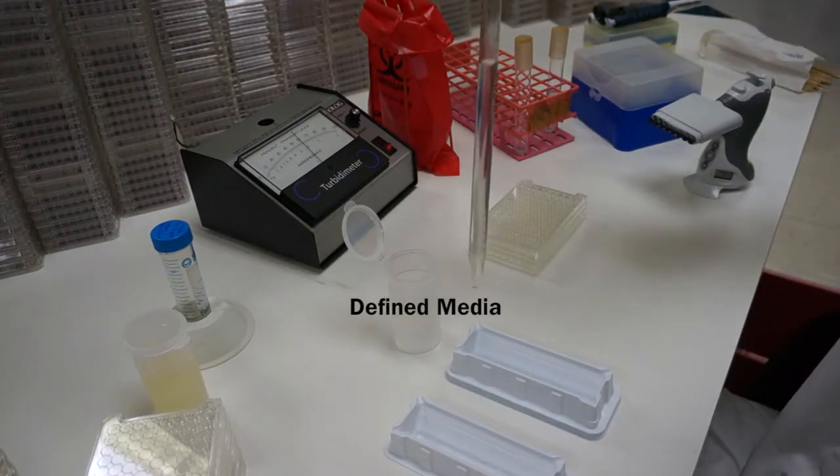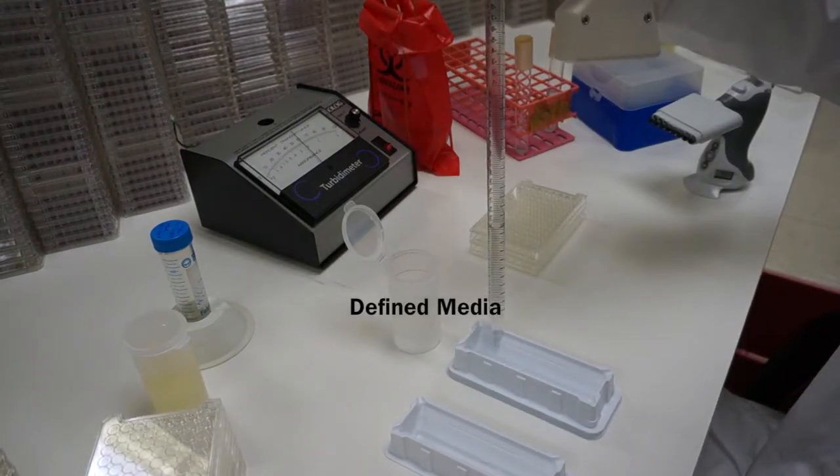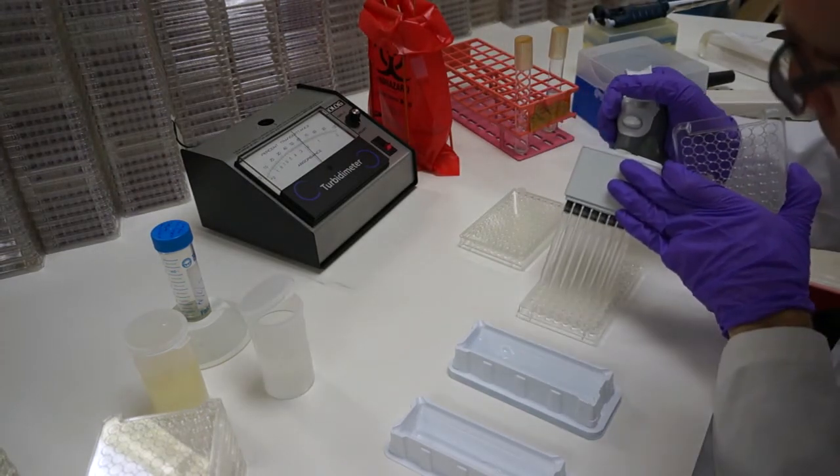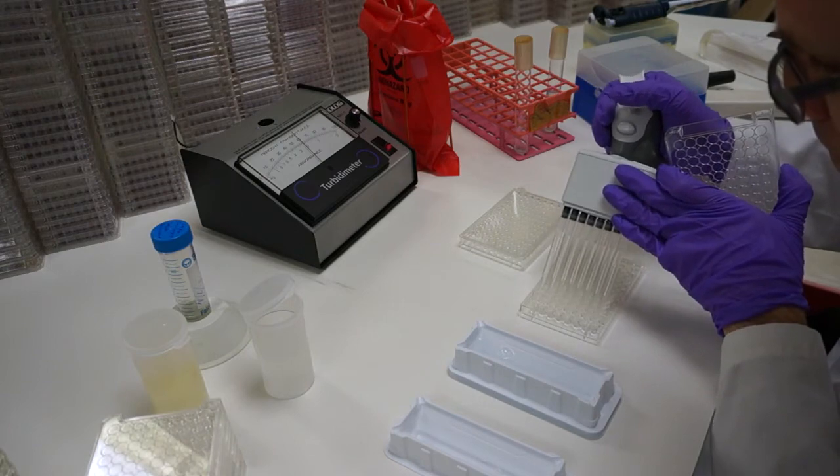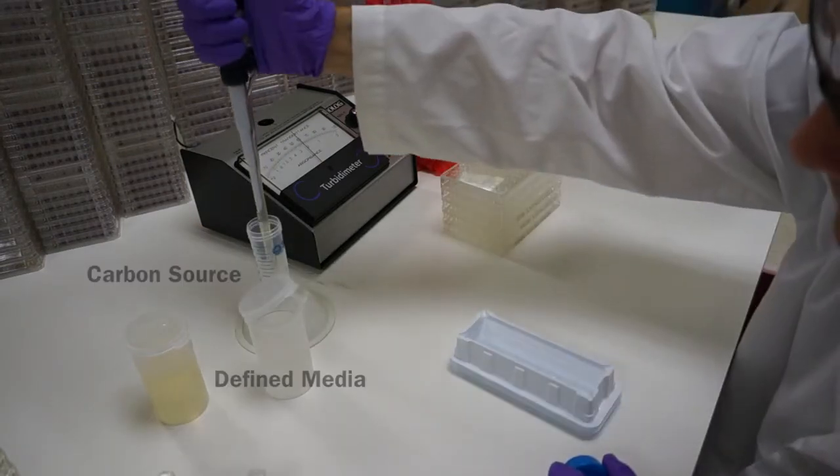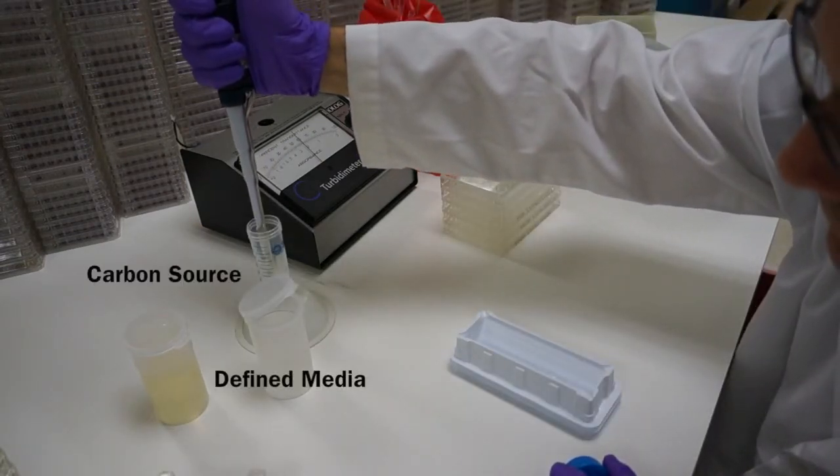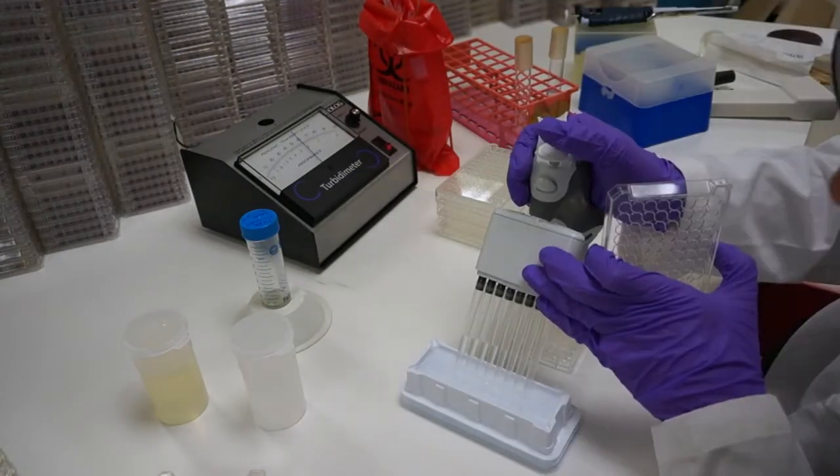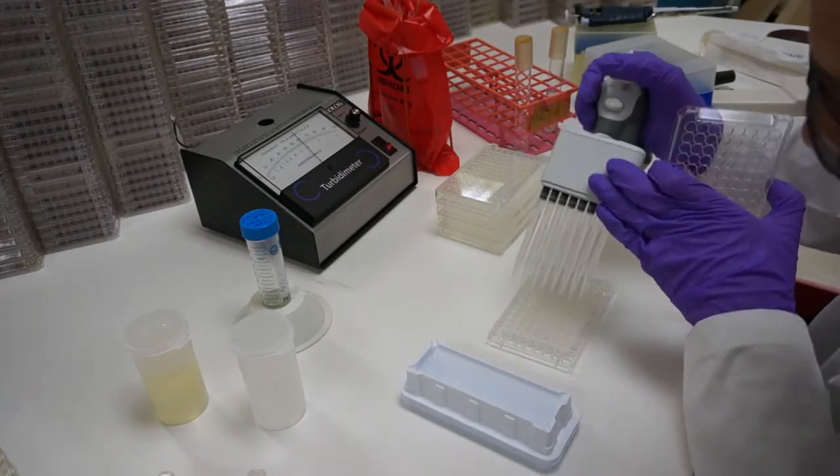Retrieve your original defined media suspension and fill PM microplates 1 and 2. Lastly, add a carbon source to the remaining defined media and dispense into PM microplates 3 through 8.